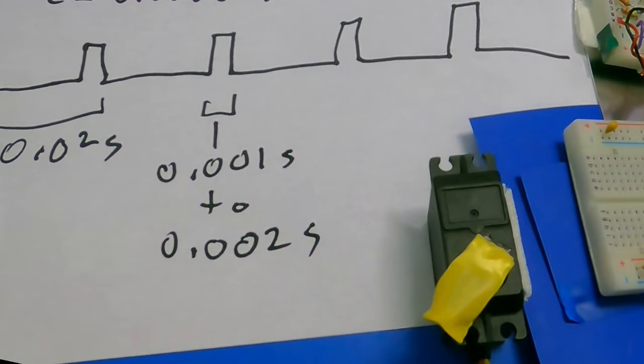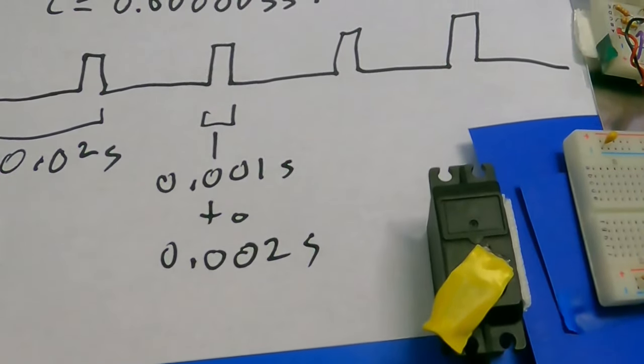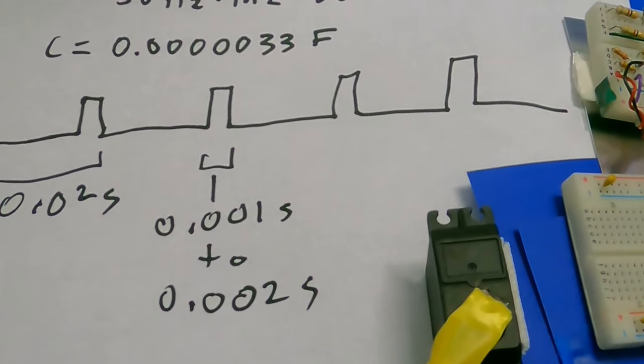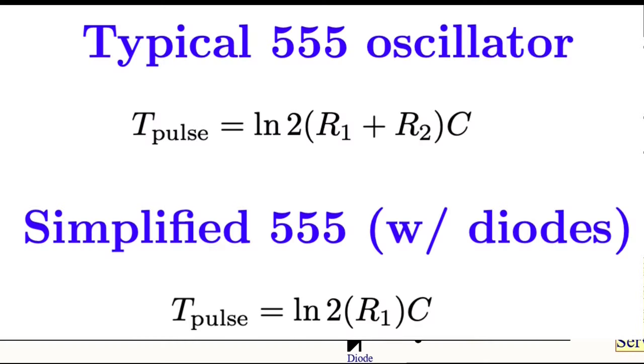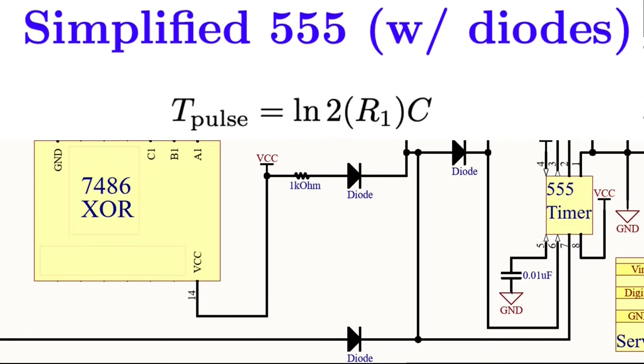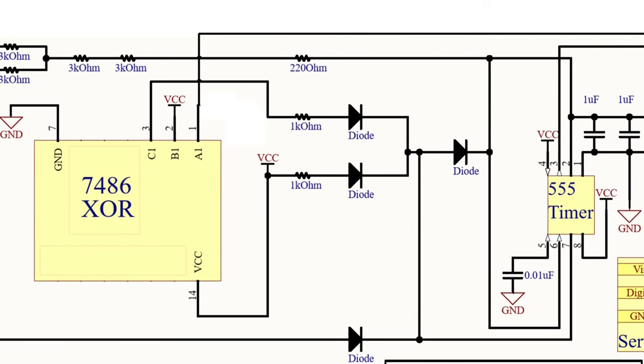Alright, so now I need to do some math to calculate how to get those values with the capacitance that I know that I have. In a typical 555 timer, the width of the pulse depends both on R1 and R2. However, I've set up some diodes so that the pulse only depends on R1. You can see the diodes here in the diagram.